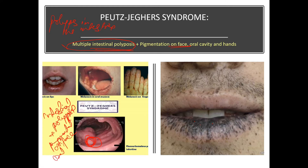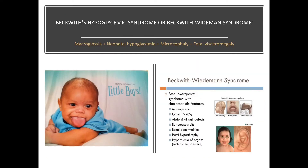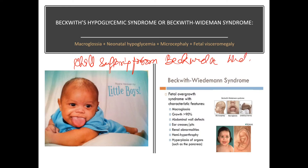So in Peutz-Jeghers syndrome: intestinal polyposes, pigmentation on face, oral cavity, and hands. Now Beckwith-Wiedemann syndrome — this is a child suffering from Beckwith-Wiedemann syndrome. The most important point to remember is macroglossia — very large tongue.